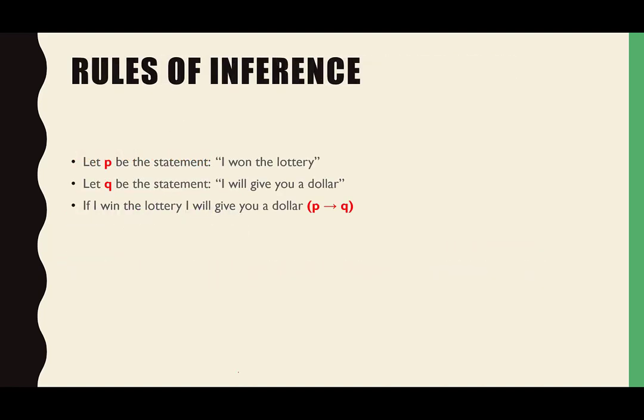Let's go back to the simple stuff. Let P be the statement 'I won the lottery,' and Q be the statement 'I will give you a dollar.' I'm saying P, therefore Q. If I won the lottery, therefore I will give you a dollar.